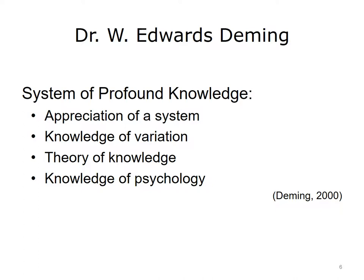Deming advocated that all managers need a system of profound knowledge, consisting of four parts providing the foundation of his 14 points. The four key points are: appreciation of a system, involving understanding the overall processes involving suppliers, producers, and customers; knowledge of variation, involving understanding the range and causes of variation in quality and the use of statistical sampling; theory of knowledge, referring to concepts explaining knowledge and the limits of what can be known; and knowledge of psychology, referring to concepts of human nature and their importance in impacting quality. (Deming, 2000)